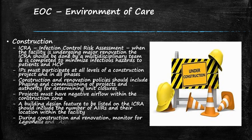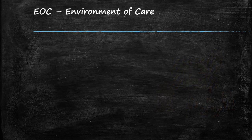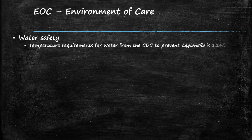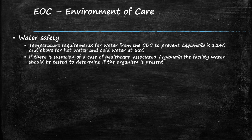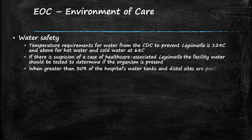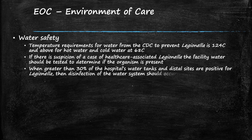During construction and renovation, you must monitor for Legionella and Aspergillus. Temperature requirements for water from the CDC to prevent Legionella is 124 degrees Celsius and above for hot water and cold water at 68 degrees Celsius. If there's a suspicion of a case of healthcare-associated Legionella, the facility water should be tested to determine if the organism is present. When greater than 30% of the hospital's water tanks and distal sites are positive for Legionella, then disinfection of the water system should occur.